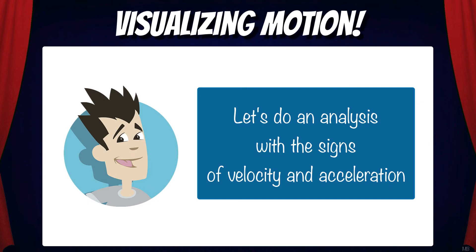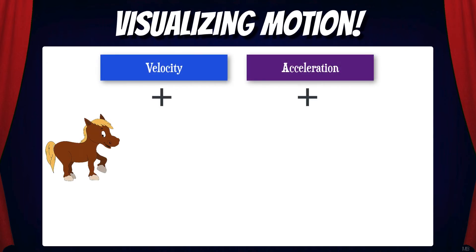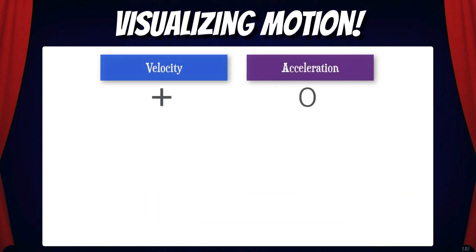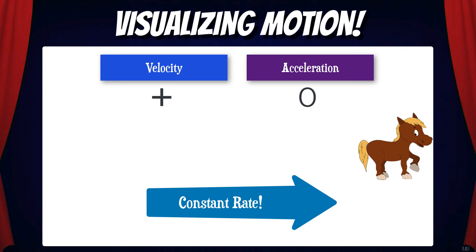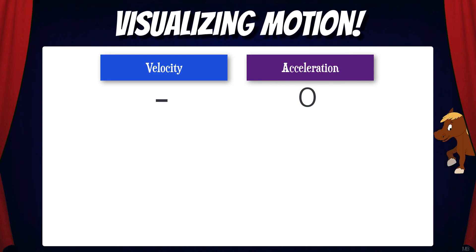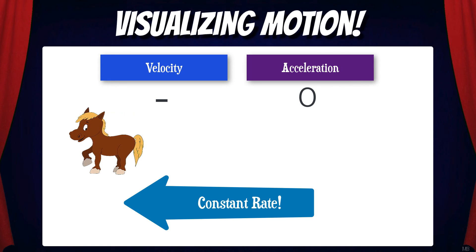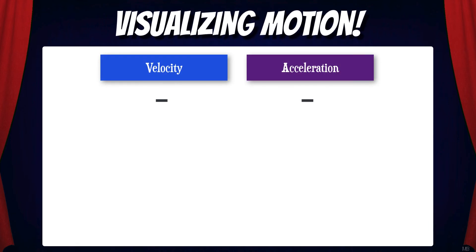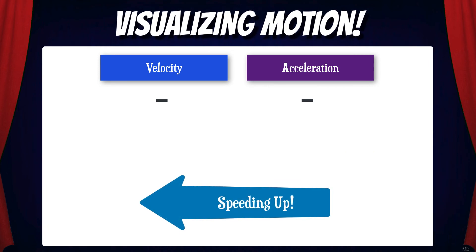Now let's do an analysis with the signs of velocity and acceleration. This will help you develop an intuitive understanding that you can rely on to help you better visualize motion. Suppose that the velocity and acceleration of a horse are both positive — that would mean that the horse is speeding up in the positive direction, speeding up while moving to the right. But if the velocity of the horse is positive and the acceleration is zero, that would mean that the horse is just moving forward at a constant rate — moving to the right at a constant rate. Now suppose that the velocity of the horse is negative and the acceleration is zero — that would mean that the horse is moving at a constant rate in the negative direction, to the left. But if the velocity and acceleration are both negative, that would mean the horse is speeding up in the negative direction, speeding up to the left.